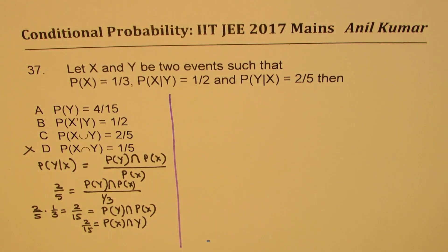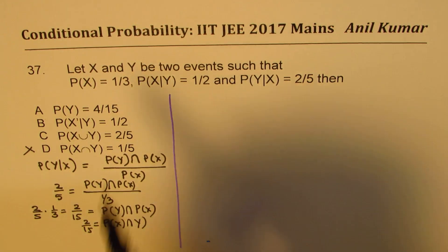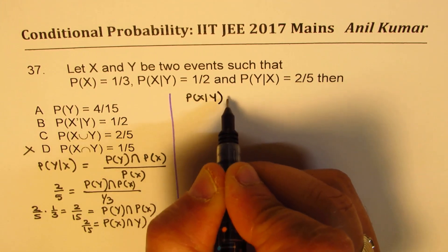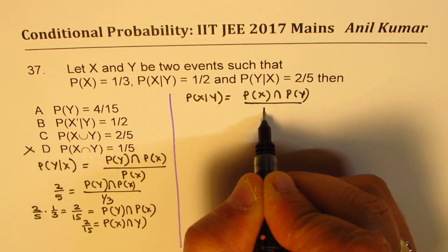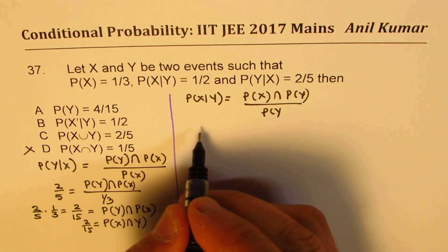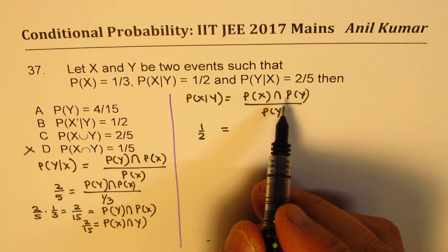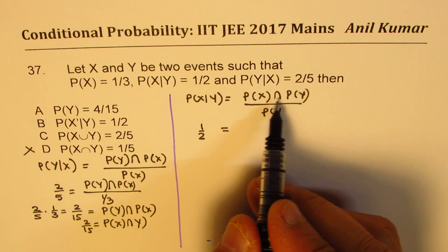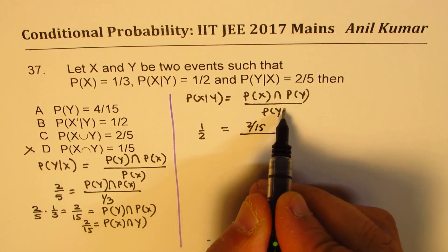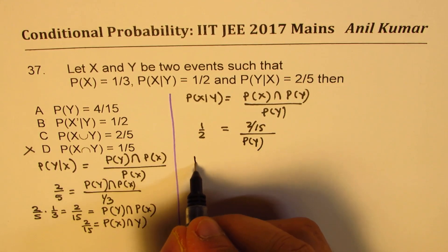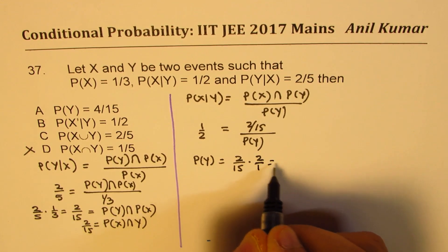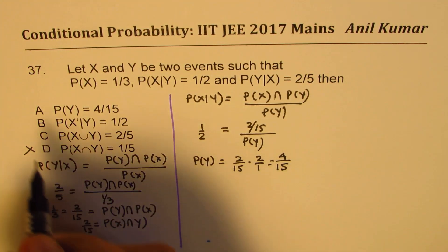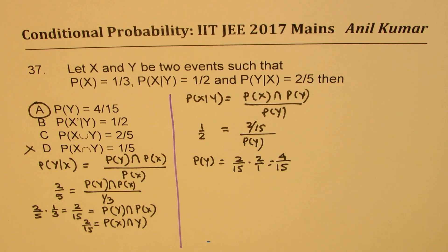Now, from probability of X given Y, that means probability of X intersection Y divided by probability of Y. We know this is one-half, and we just found the intersection as two over 15. We need to find probability of Y. Cross-multiplying, we get probability of Y equals two over 15 times two over one, which gives us four over 15. So option A is the right choice.